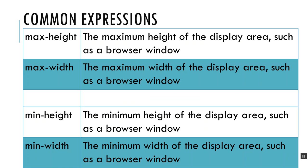So what can you put inside those parentheses? Here are the most common expressions. You can say do this up to a maximum height or a maximum width of some amount of pixels, which means the rule will be applied to devices up until they hit that number. Alternatively, you can say display this until something is shrunk down to a minimum height or minimum width. So you can define styles for larger screens and as it shrinks down, change what styles are applied when it crosses a particular threshold.